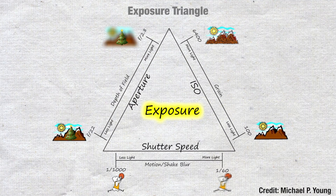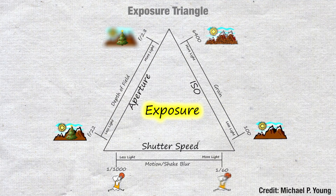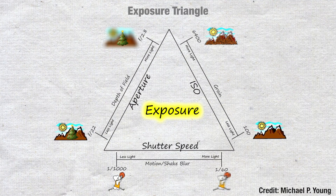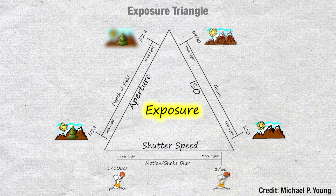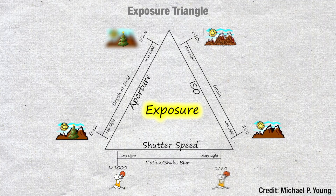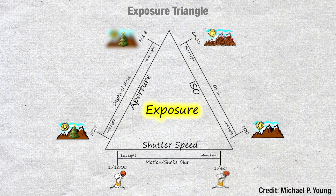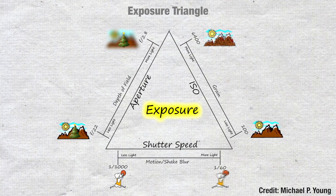When shooting photos or videos, exposure is controlled by three variables as we've spoken about in my previous videos. These three variables are aperture, ISO, and shutter speed. We've already gone through ISO and aperture.